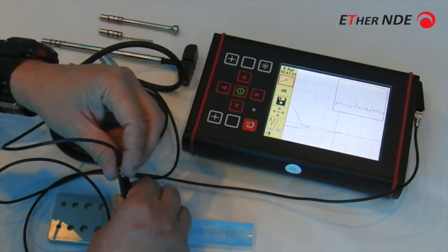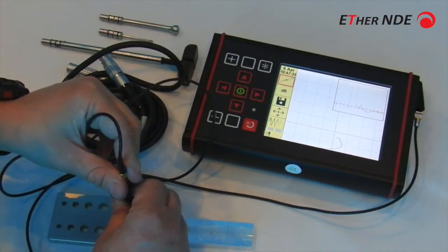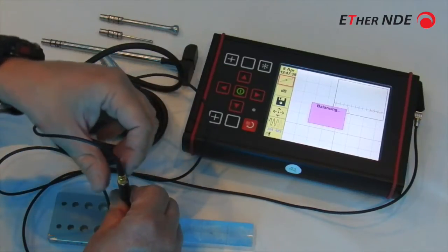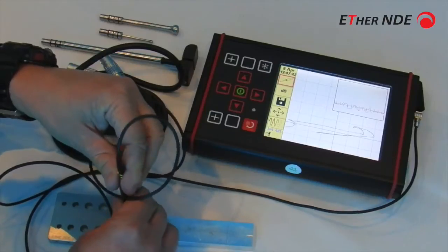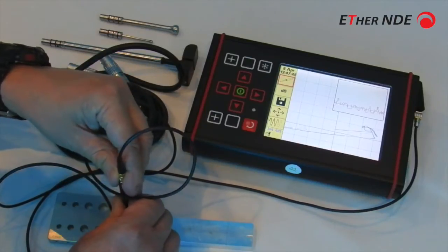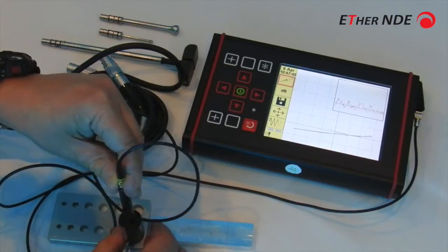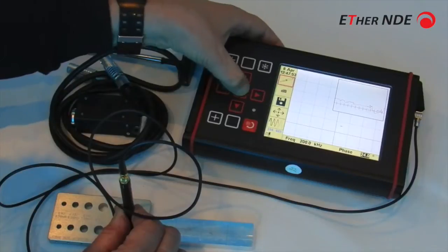And again, this hole here. And again, this hole here. And again, this hole here. And again, we have the defect response coming up there because we know all the other stuff is handling noise. We can probably make it a bit better.